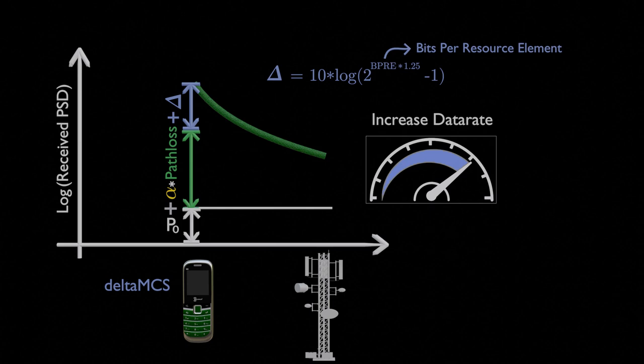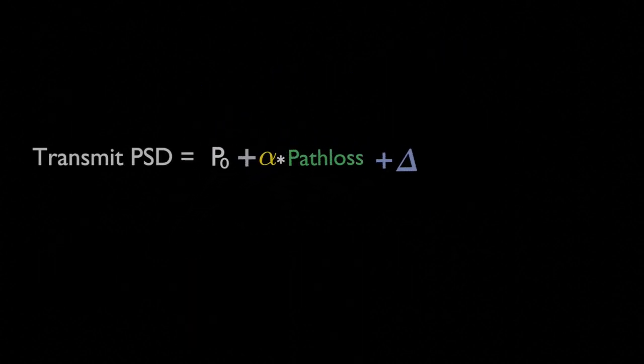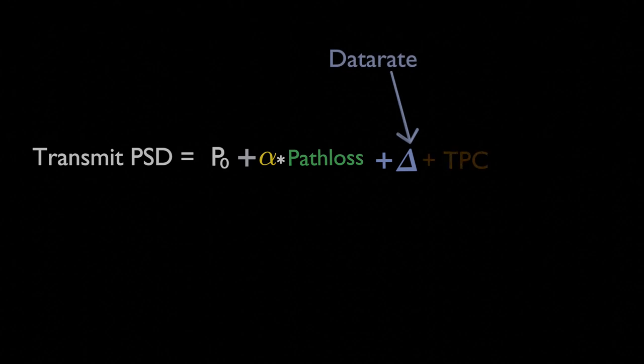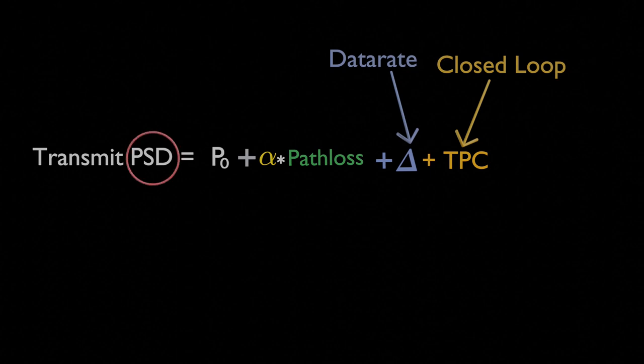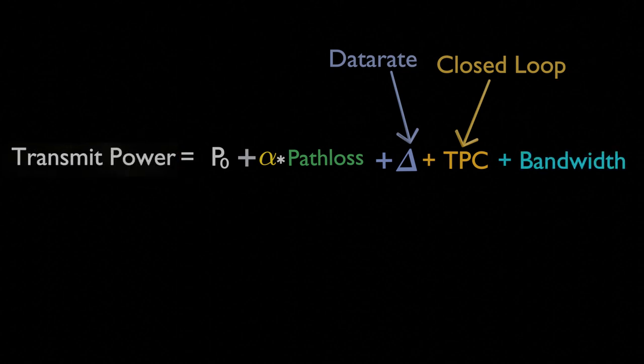That is all. Here's the final equation for uplink power, considering path loss compensation, data rate dependent component, and closed-loop component. Note that this computation is for PSD, that is, power per hertz, not the total power. To get the total power, you simply multiply PSD with bandwidth, or add bandwidth in logarithmic domain.